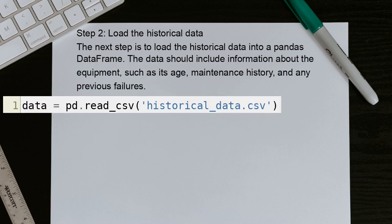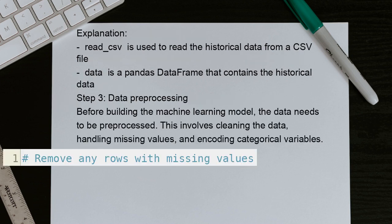Step 2: Load the historical data. The next step is to load the historical data into a pandas DataFrame. The data should include information about the equipment, such as its age, maintenance history, and any previous failures. Explanation: read_csv is used to read the historical data from a CSV file. data is a pandas DataFrame that contains the historical data.